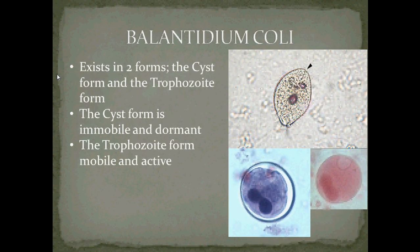Balantidium coli exists in two forms: the cyst form and the trophozoite form. Below here are images of the cyst form — they are immobile and dormant. The image above shows the trophozoite form of Balantidium coli, which is mobile and active.